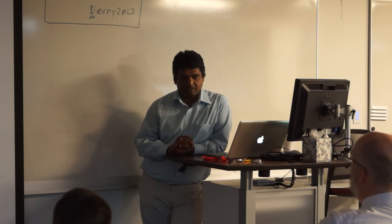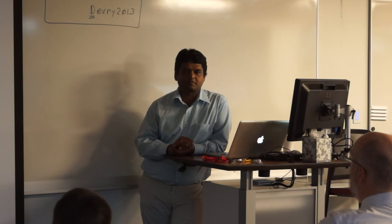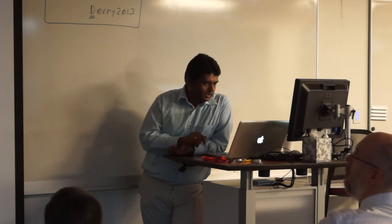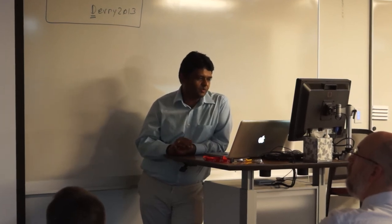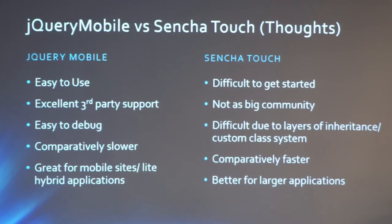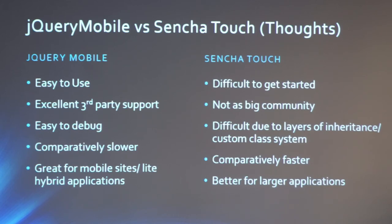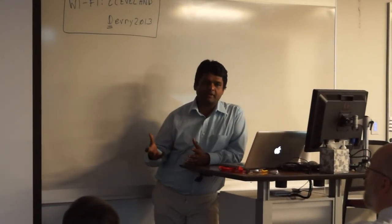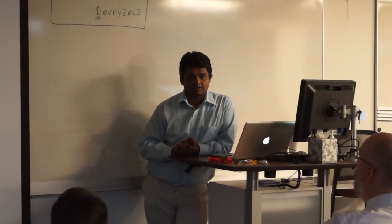Things like Sencha Charts, which are HTML5 charts, have moved to a subscription package, so you need a subscription before you can use Sencha Charts. Our thoughts are that jQuery Mobile is easy to use and Sencha Touch is difficult to get started. The community on Sencha Touch is not as big as jQuery's since jQuery is widely used. But what we have found is it's comparatively faster and better for larger applications. If I'm developing an application with complex business logic, I will go with Sencha Touch. If it's something simple like a shopping cart, I will go with jQuery Mobile.